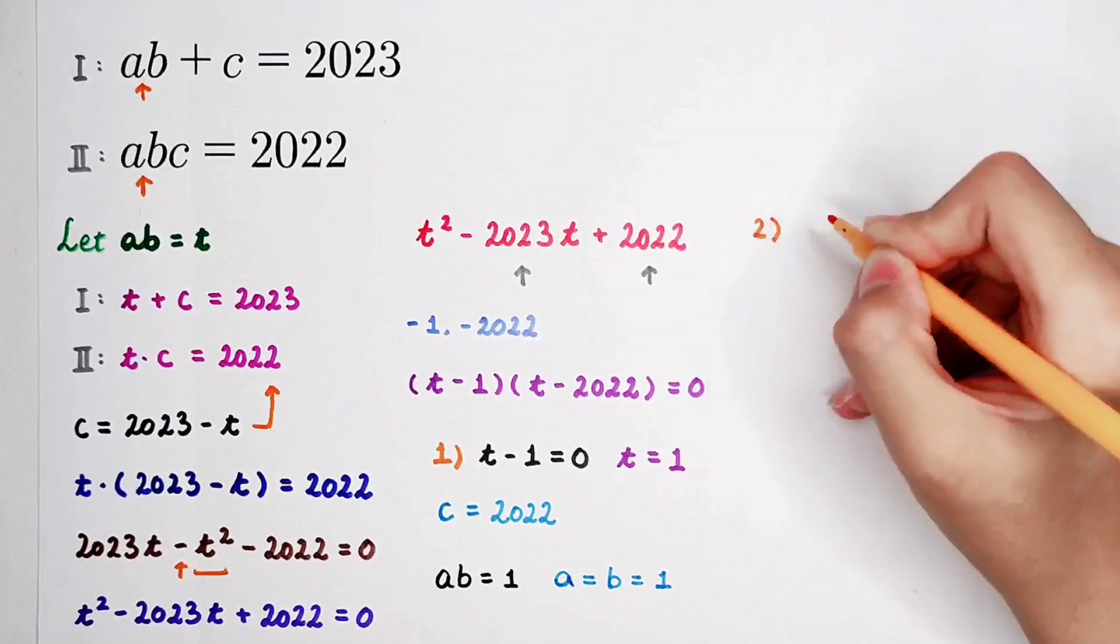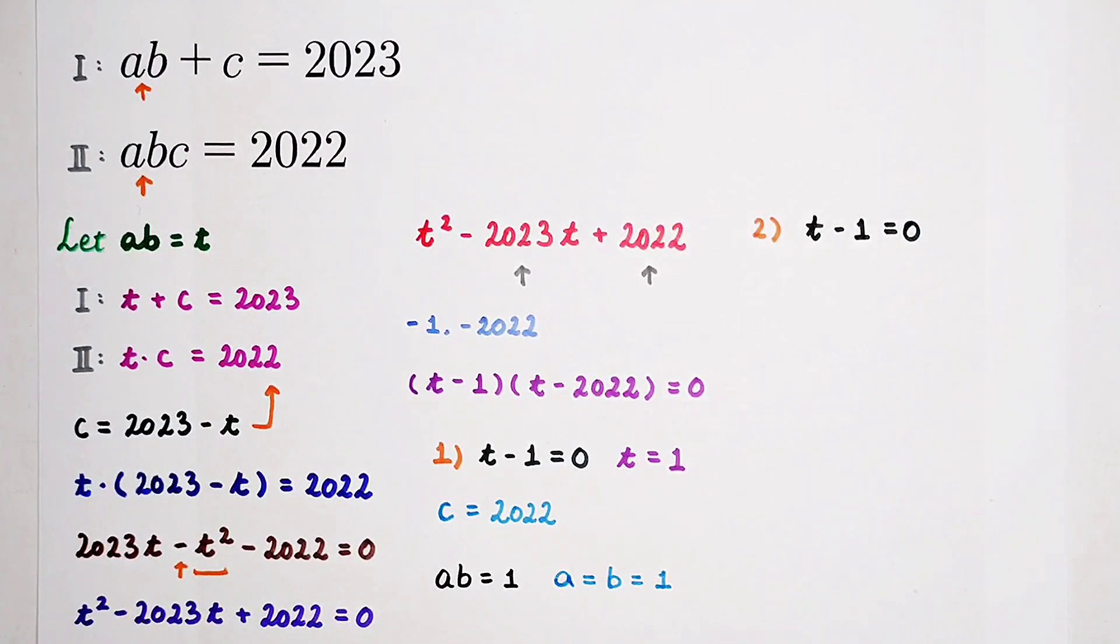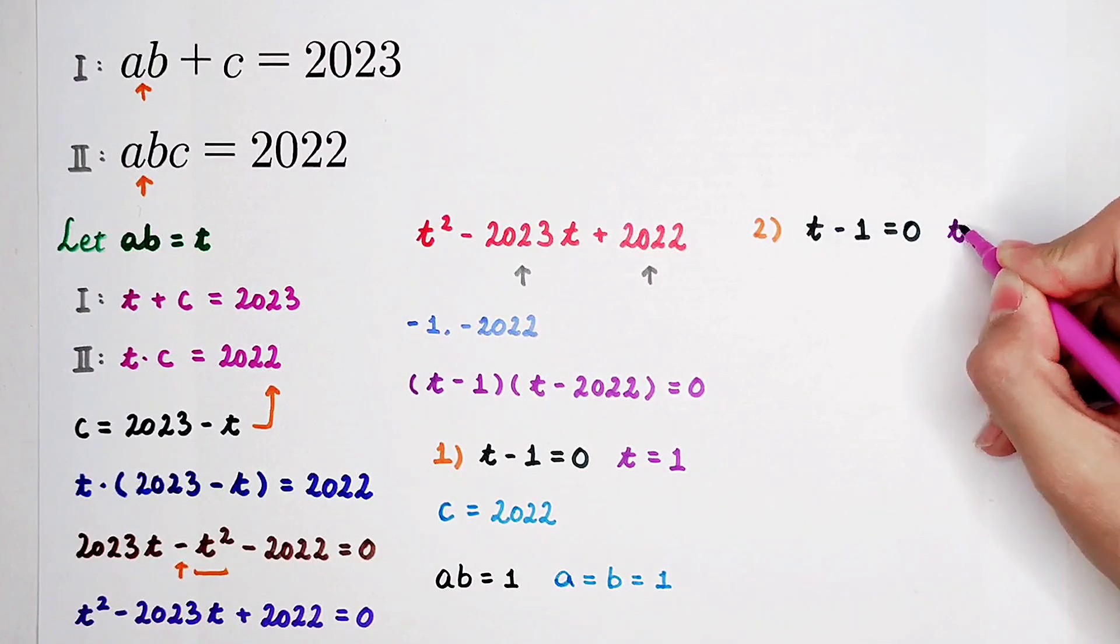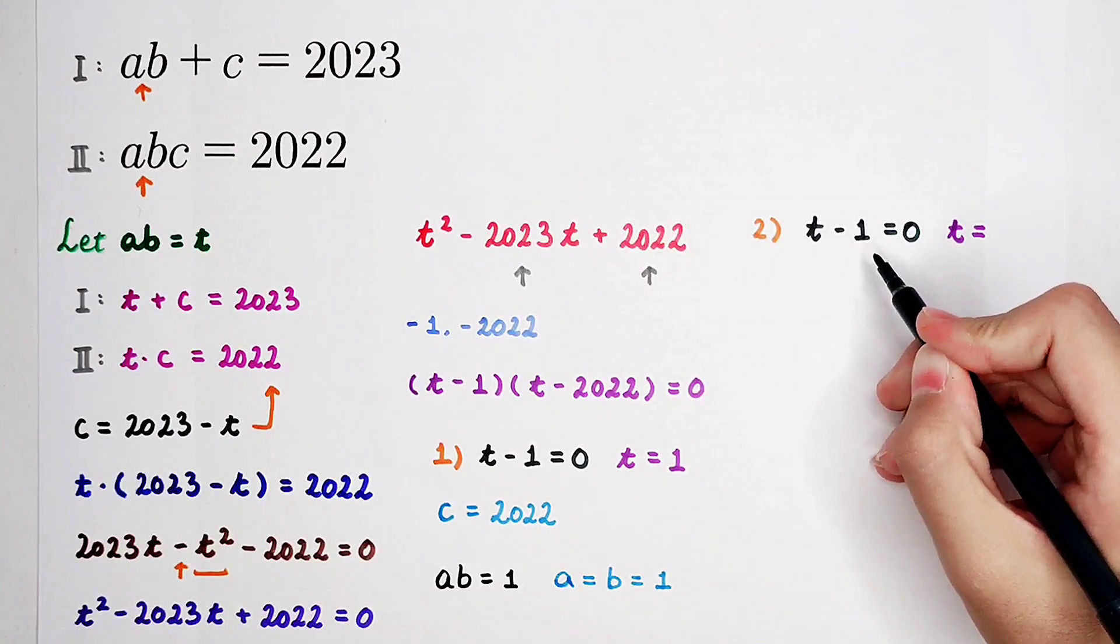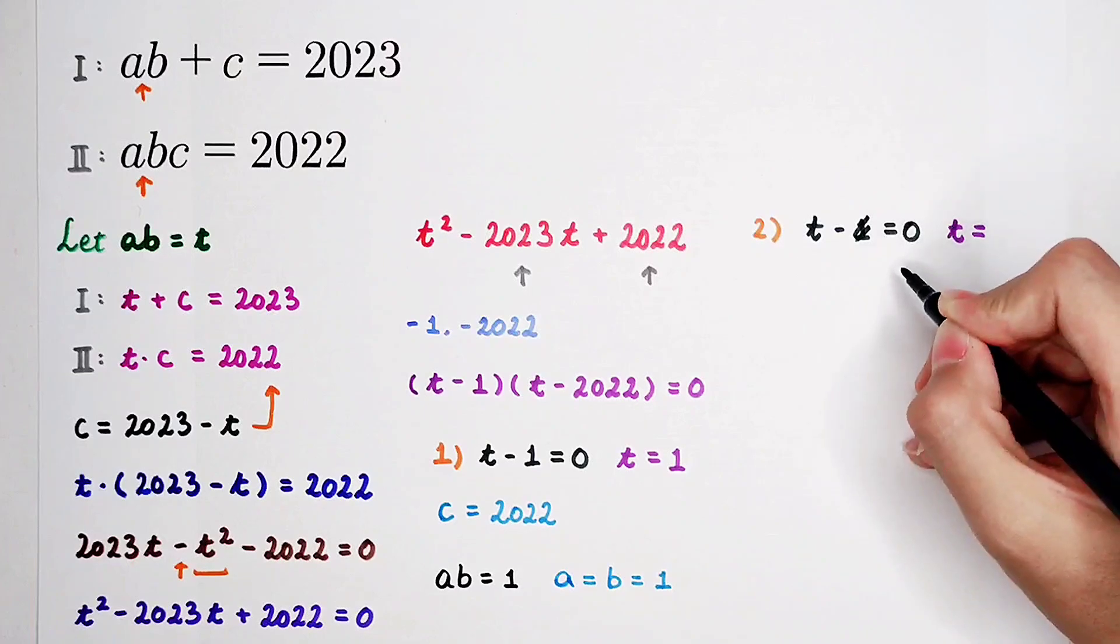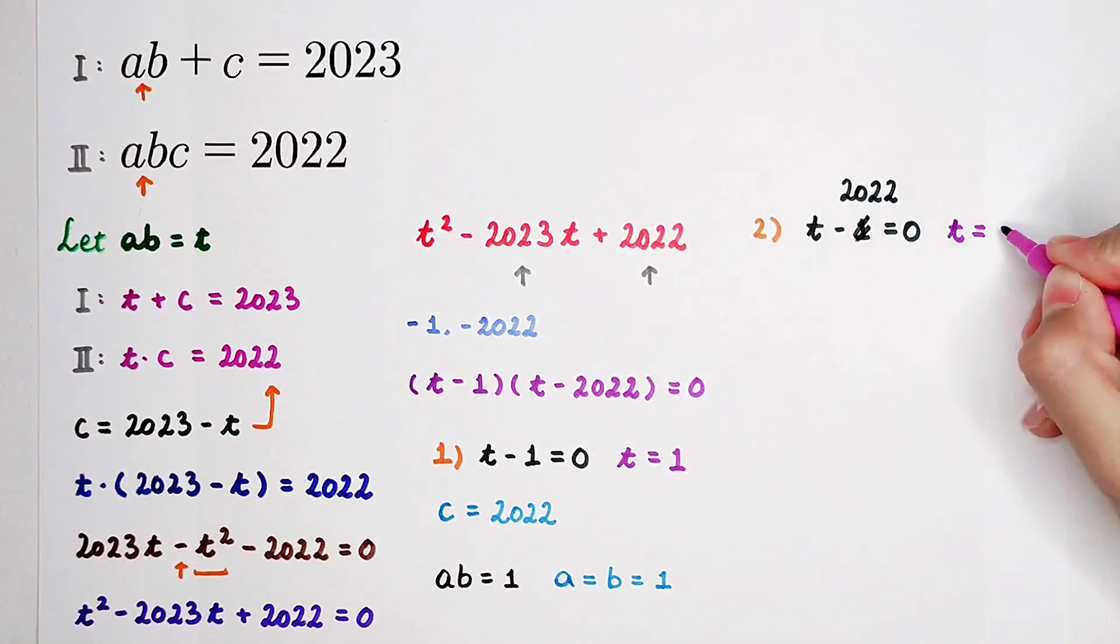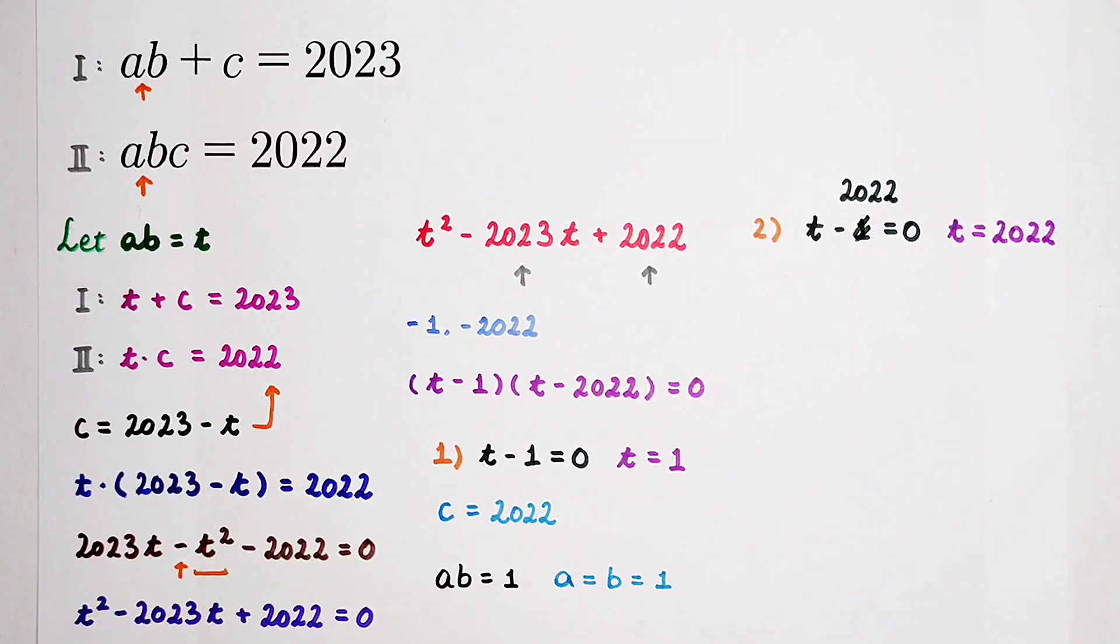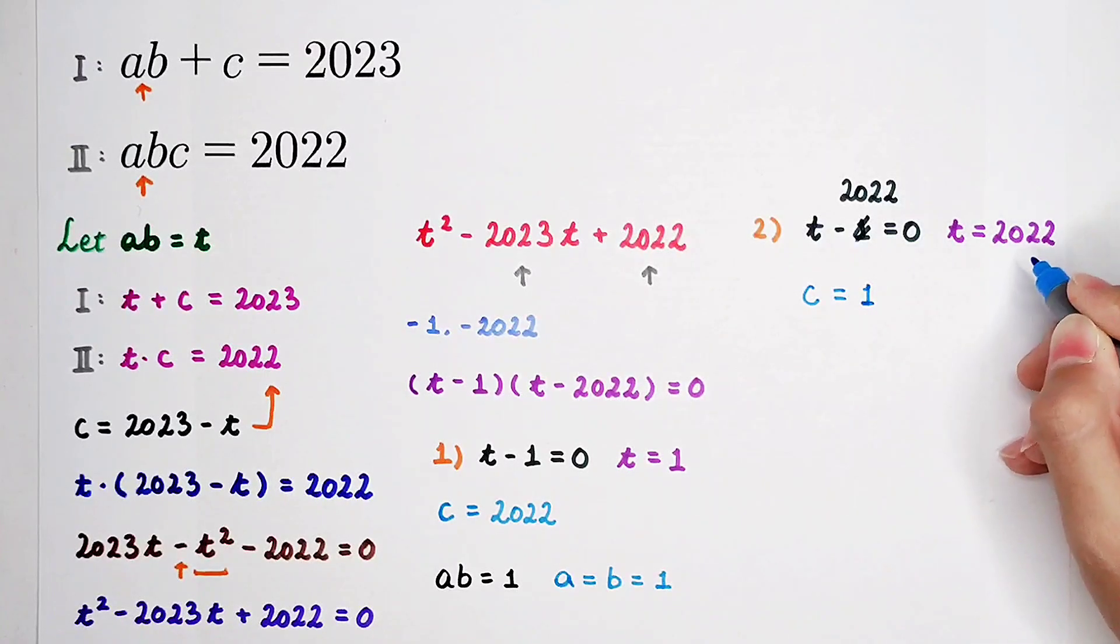The second case will be much more complicated. Case 2: t - 2022 = 0. In this case, t = 2022. What does it mean? It means ab = 2022. We can solve for the value of c first. c = 1 since it is 2023 - 2022.